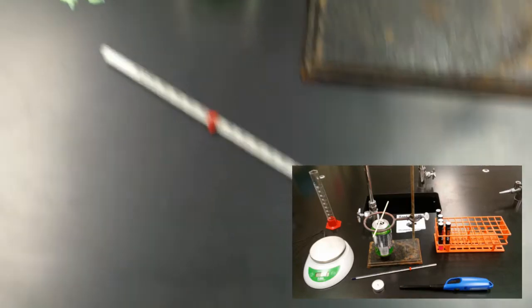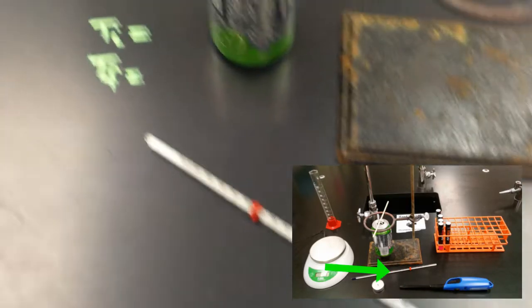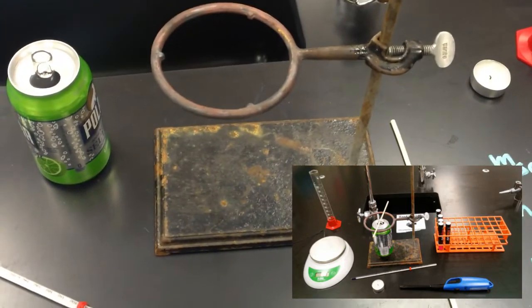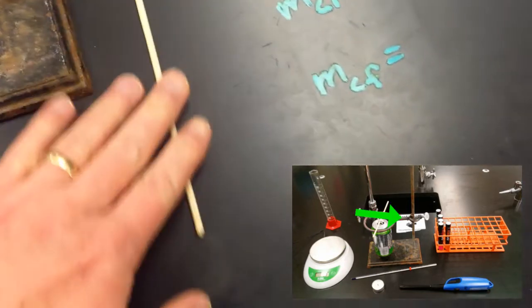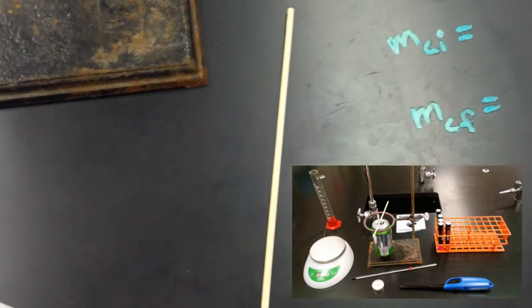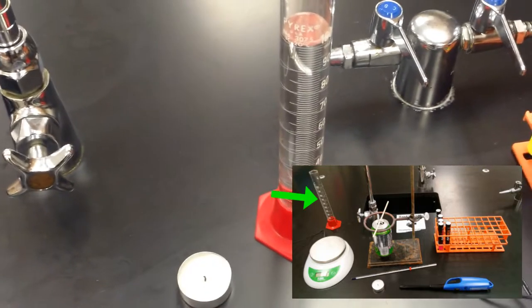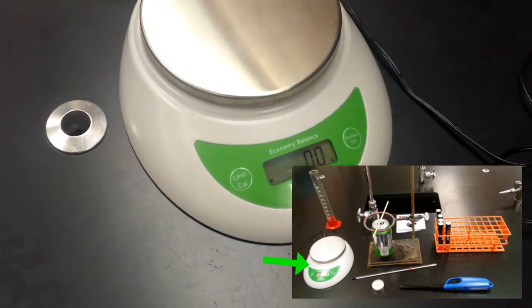Okay, so to do this experiment we need a thermometer, we need an empty soda can, we're going to use a ring stand, I've got a portion of a bamboo skewer that I'm going to use, a tea candle, a graduated cylinder with 100 milliliters of water, and an electronic balance.